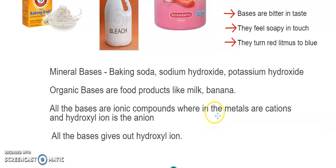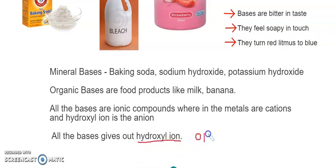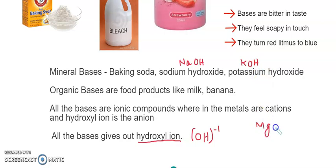Like in acids where the ionic compounds have hydrogen as the positive ion or cation, all bases are also ionic compounds. They have different metals combined with the hydroxyl ion. The hydroxyl ion is the anion, and the metals are the cation. So when a base is broken into its ions, you get the hydroxyl ion — OH minus. Sodium hydroxide is NaOH, potassium hydroxide is KOH, magnesium hydroxide is Mg(OH)2, zinc hydroxide is Zn(OH)2.